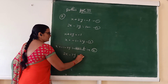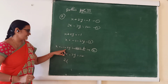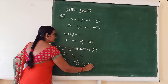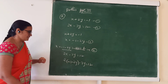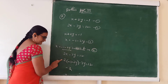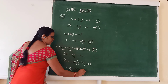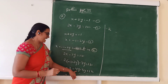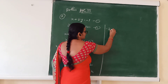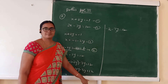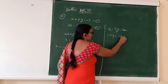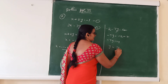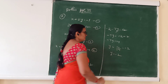Substituting into 2x minus 3y equal to 12: 2 times (minus 1 minus 2y) minus 3y equal to 12. This gives minus 2 minus 4y minus 3y equal to 12, so minus 2 minus 7y equal to 12. Then minus 7y equal to 12 plus 2 equals 14, so y equal to 14 divided by minus 7, therefore y equal to minus 2.